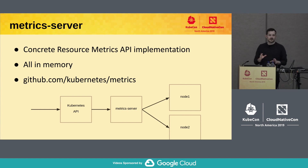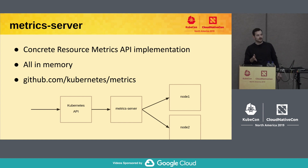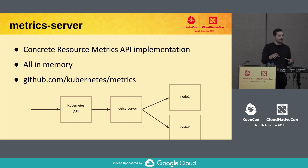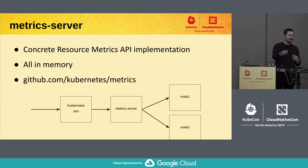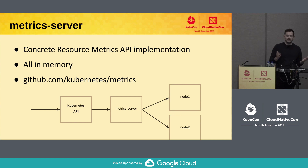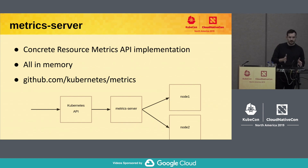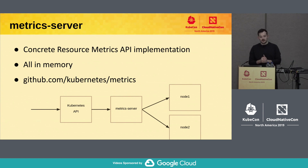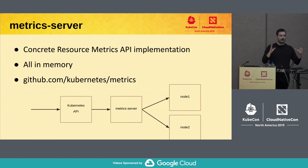Generally speaking, the resource metrics pipeline is just an API definition, and any monitoring system could implement it. A very concrete implementation this SIG owns is the Metrics Server. It's a simple component — it fans out to all the nodes in your cluster, hits a specific API on the kubelet, and keeps only the very latest samples for each container in memory. When you do kubectl top, it returns exactly what you requested.